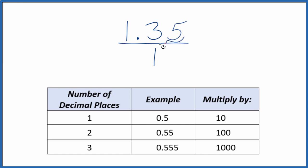Since we have two decimal places after the decimal point, we're going to multiply by 100. And that's going to give us a whole number. So we take 100 times 1.35. That gives us 135. So that's our whole number.